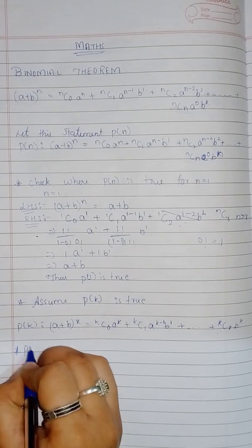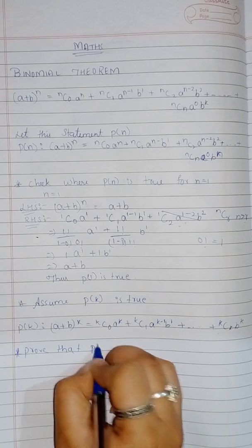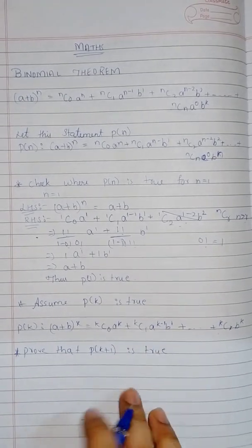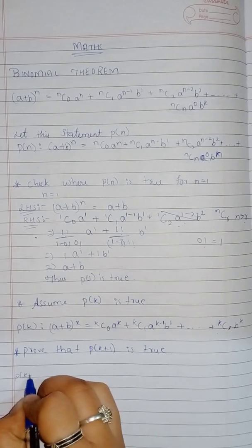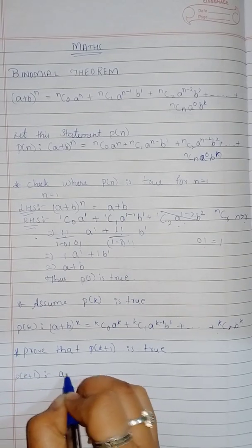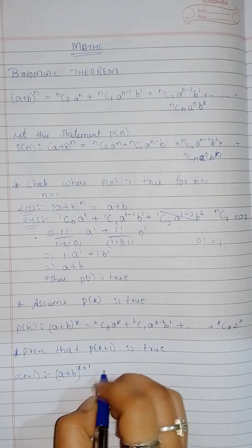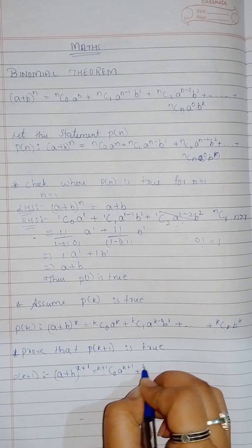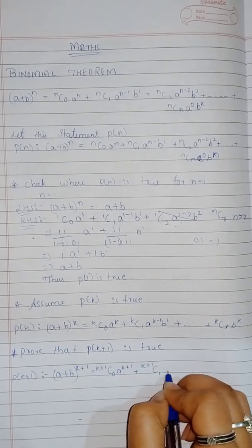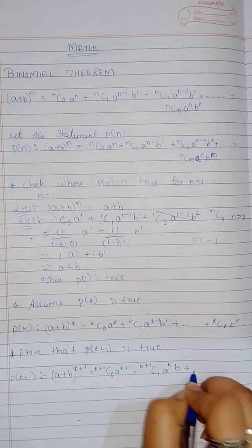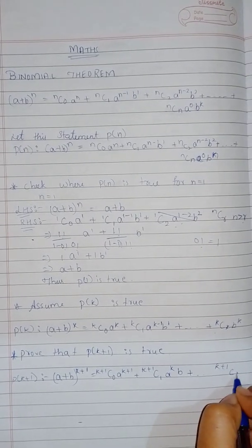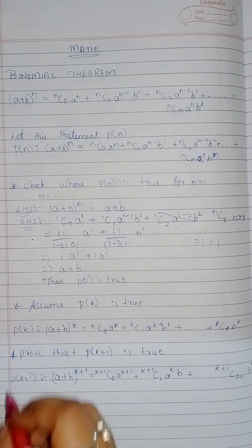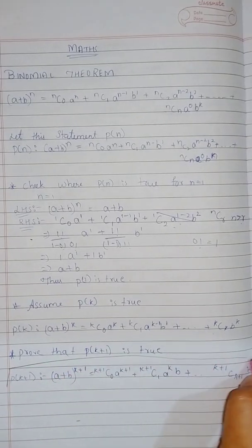The third step is to prove that P(k+1) is true. P(k+1) is: (a + b)^(k+1) = (k+1)C0·a^(k+1) + (k+1)C1·a^k·b + ... + (k+1)C(k+1)·b^(k+1). We are just writing this to have a reference — this is what we have to prove.